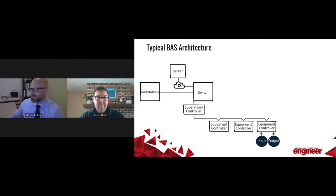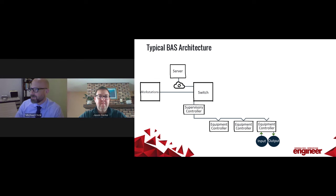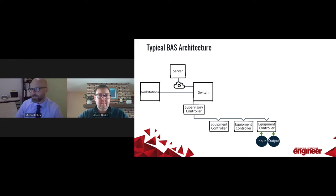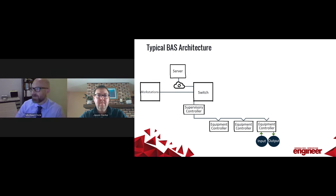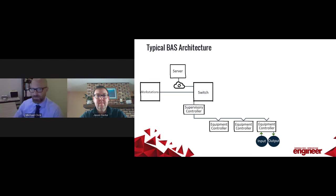Taking a deeper look into building automation architecture: there are really four layers to any modern building automation system architecture. There's your server application level, then your supervisory layer called supervisory control, your field control layer which is the equipment controllers tied to the bus, and then your input-output layer — your I/O.